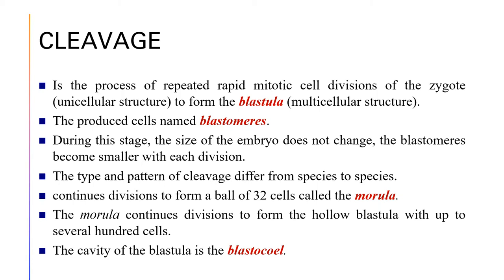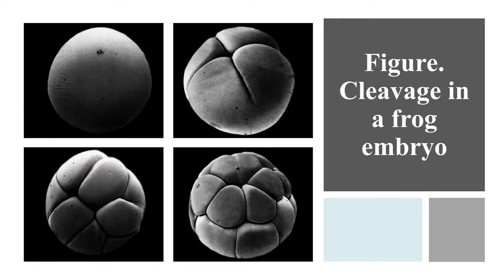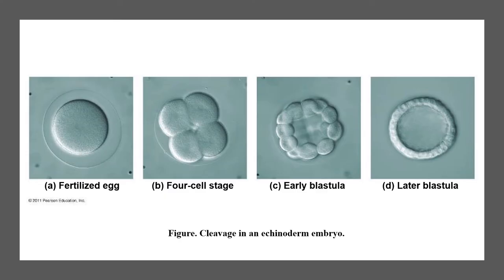This blastocel would have some amounts of water in it. Here, you will see how a cleavage process is happening within a frog embryo — coming from a ball of cells, it will eventually have continuous divisions to form the blastomeres. Another example is the cleavage process happening in an echinoderm embryo. You will see how a fertilized egg looked like, then going to its four-cell stage, then its early blastula, and then the later blastula.